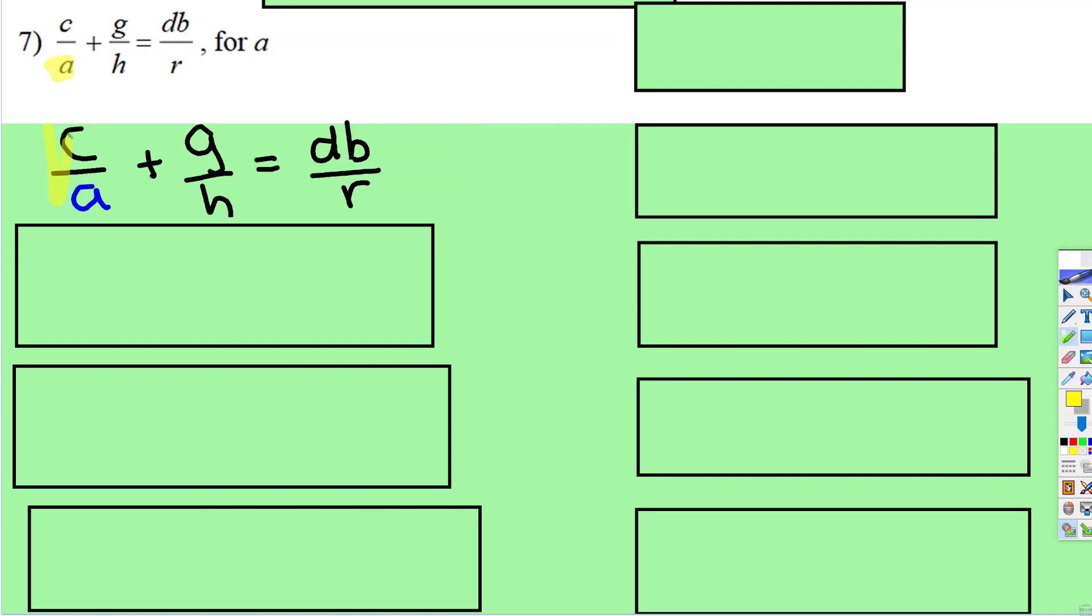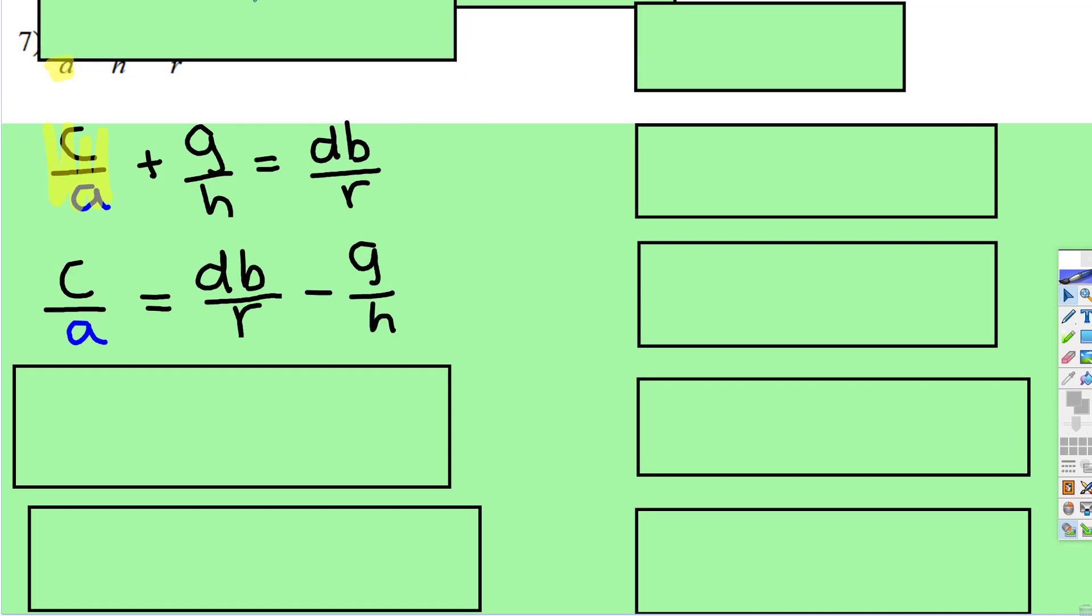So what I'm going to do is I'm going to get this fraction by itself by subtracting the g divided by h. Before we can flip everything right now, what we can do is if we multiply this top and bottom by h and this top and bottom by r, it will now be a fraction with the same denominator. Then we'll have a fraction equal to a fraction.